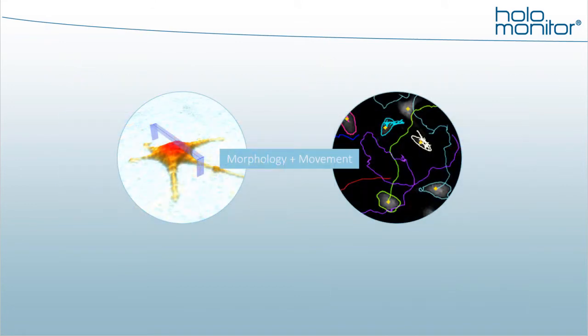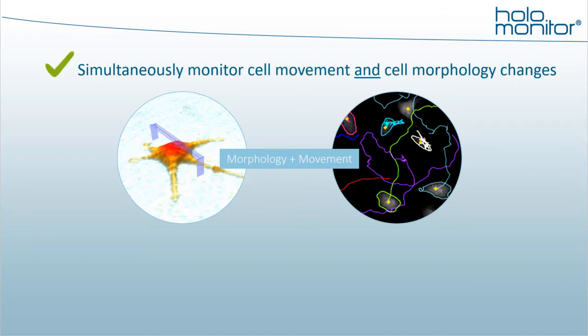I want to highlight the immense potential stemming from having multiple assay results — for example, combining morphology insights with cell movement data, all from one experiment with Holomonitor. With one experiment, I mean that you're running your one cell sample, setting up only one Holomonitor experiment, and gaining simultaneously multiple assay results, saving precious cells and time. Contrary to the traditional way of setting up several different time- and cell-consuming assays for each assay result you wish to get.